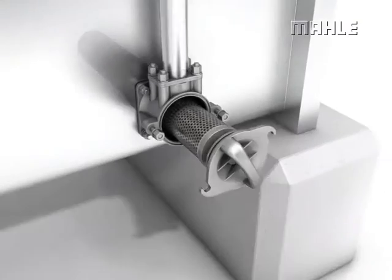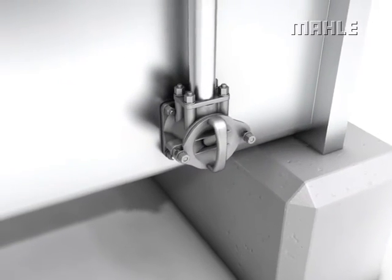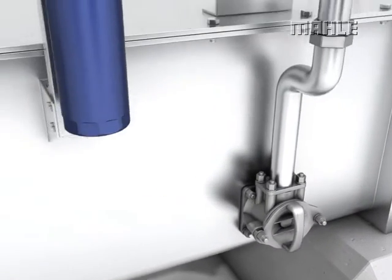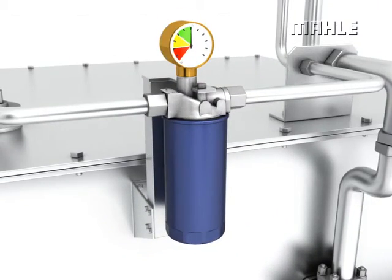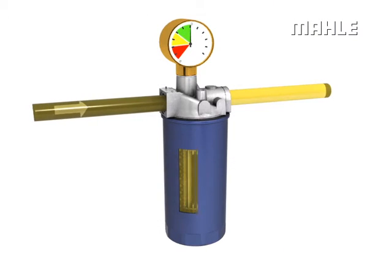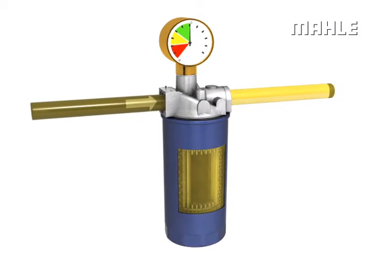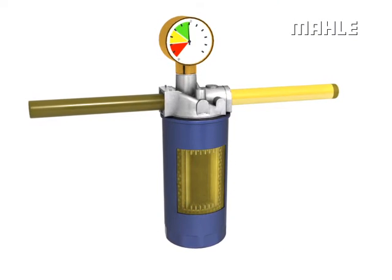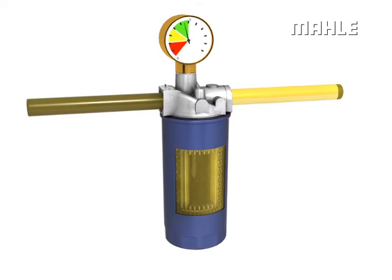Low pressure filters can also be used as suction filters. In this case, the negative pressure in the suction line is measured to monitor the element.